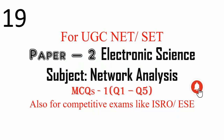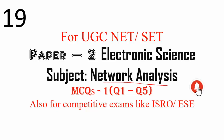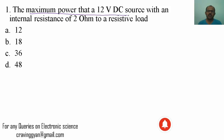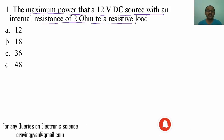Hello friends, in this video let us solve MCQs on network analysis. We are going to cover five questions. Starting with the first question: the maximum power that a 12 volt DC source with an internal resistance of 2 ohms can deliver to a resistive load is what? So let me consider a practical voltage source valued 12 volts with 2 ohms internal resistance connected to a resistive load.